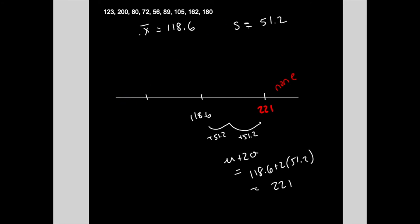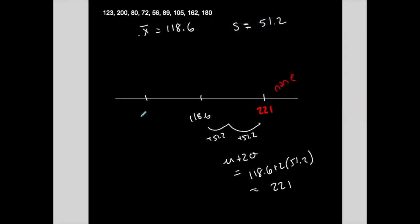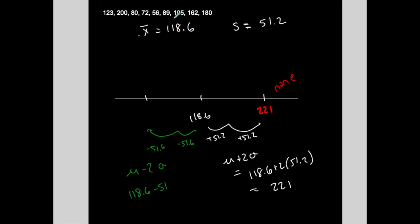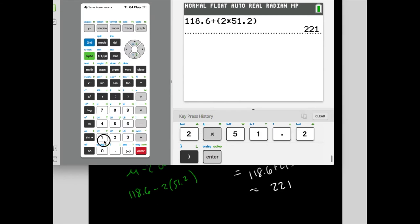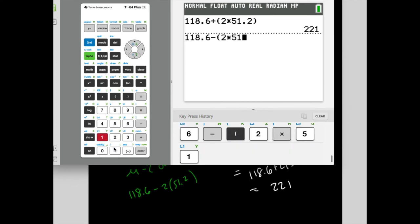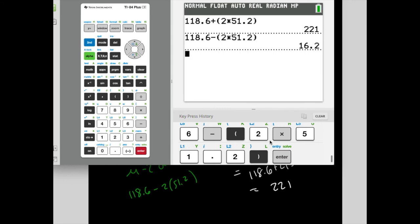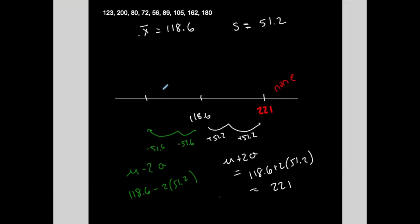Let's find the significantly low cases. Two standard deviations below the mean: take the mean and subtract two standard deviations. That's 118.6 minus 51.2 minus 51.2, or minus twice 51.2. I get 16.2.